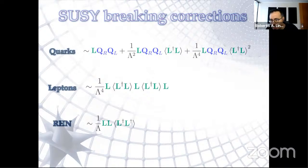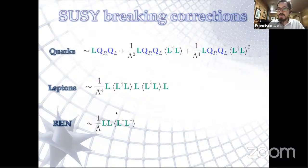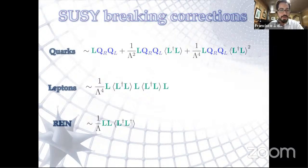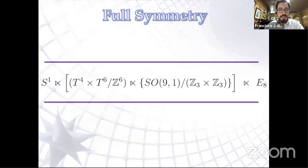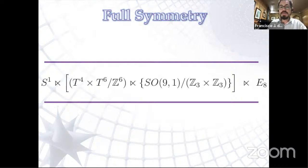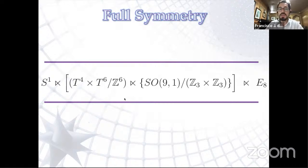Question from the YouTube chat: presumably orbifold choices result from 10-dimensional gravitational dynamics — how can we know if this particular choice is consistent? Answer: we are ignoring gravity, so there are no constraints from gravity. The constraints come purely from the Poincaré symmetry: the orbifold group must be a consistent subgroup of the Poincaré symmetry, satisfying consistency conditions that greatly limit the allowed choices. This particular choice is one of the viable options within those consistency conditions.